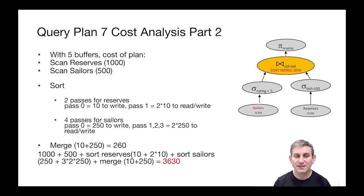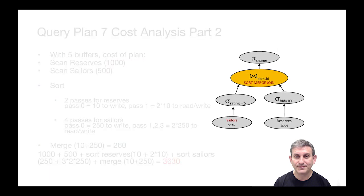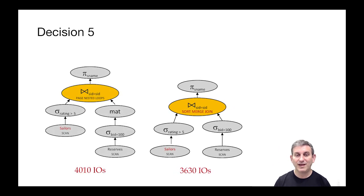And then we're going to have to pay for the merge, which as we said is 260. So the total cost is a thousand plus 500 plus sorting of reserves, which is 10 plus two times 10 plus sorting of sailors, which is 250 plus three times two times 250 plus the merge of 10 plus 250. That total is 3630, which is in fact better than the page nested loops join we were doing. So that's nice.